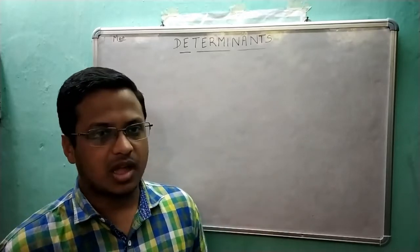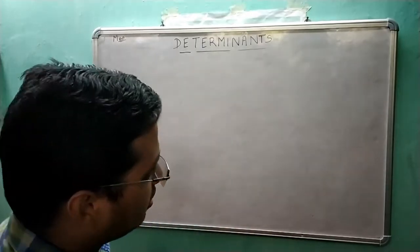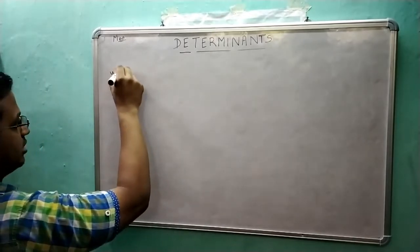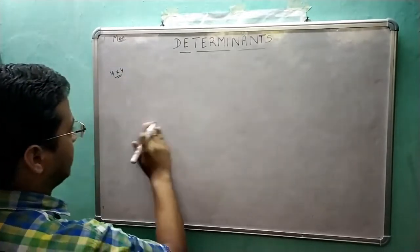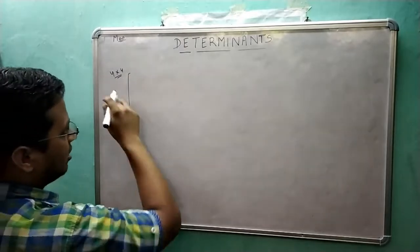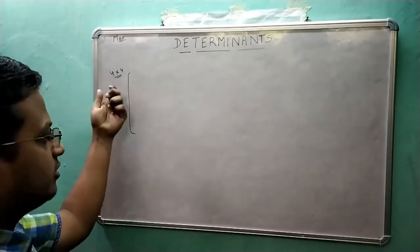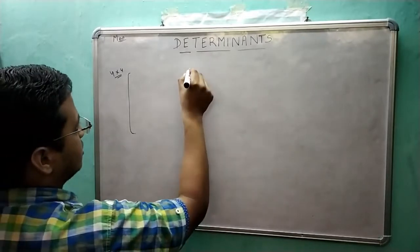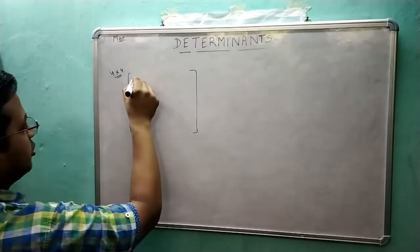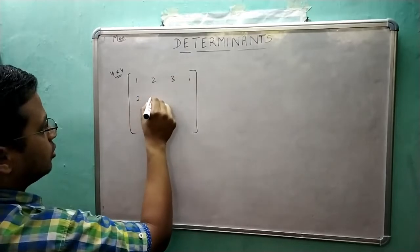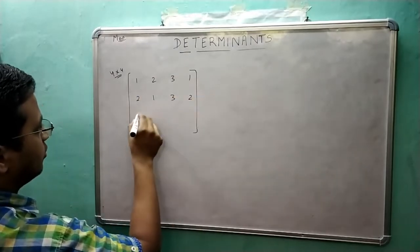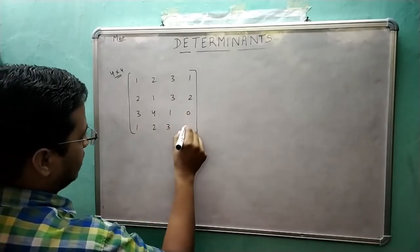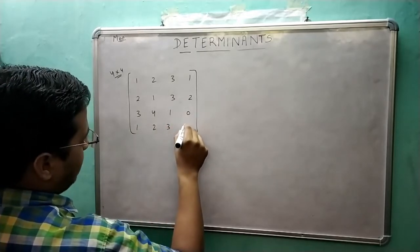Now let us see how to calculate the determinant of a 4×4 matrix. Suppose we have a 4×4 matrix — whatever process we apply will be applicable for all other types of matrices. Suppose we have the matrix: 1 2 3 1 / 2 1 3 2 / 3 4 1 0 / 1 2 3 1.